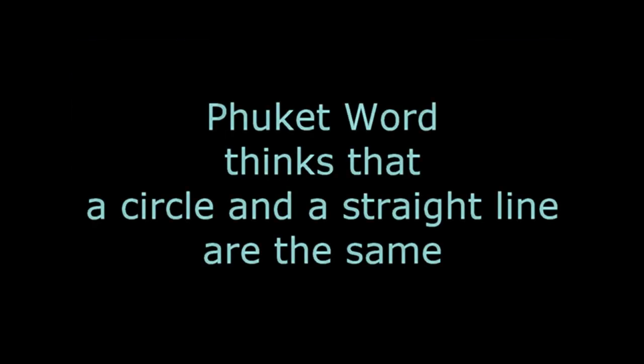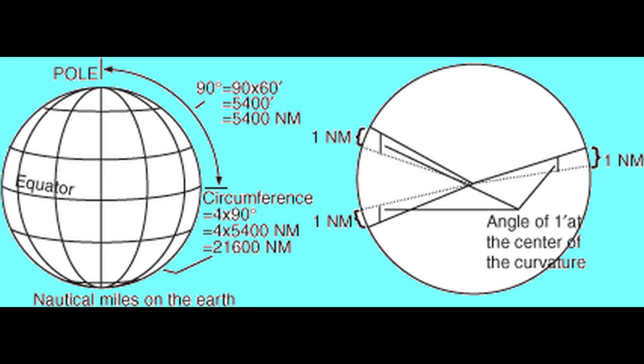Of all the silly explanations I have heard by flat earthers to support their claim that the 60 nautical miles per degree works on a flat earth, the one Phuket Word has delivered is by far the silliest one.